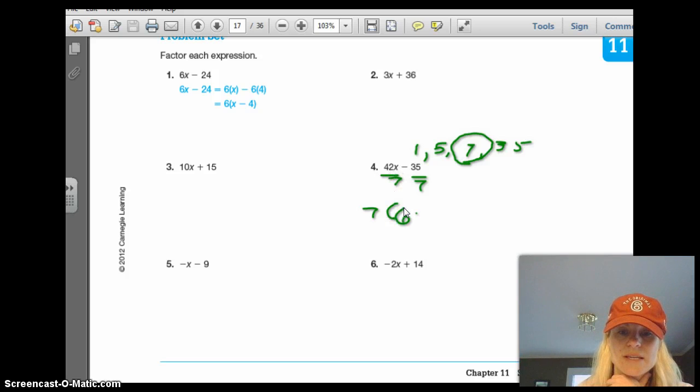And I know 7 was my dividing factor. 42 divided by 7 is 6. And that's keep the x. And then we have minus. And then 35 divided by 7 is 5. So my answer is 7 times 6x minus 5. And again, if I multiply this back out, I get back to my original problem. So pretty simple.